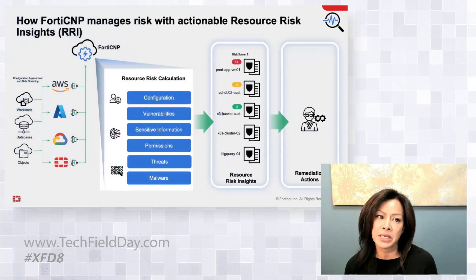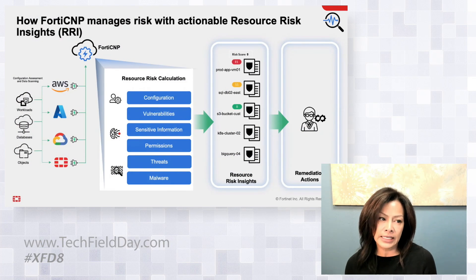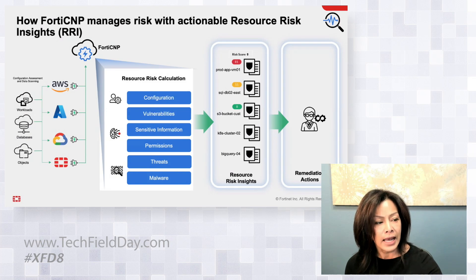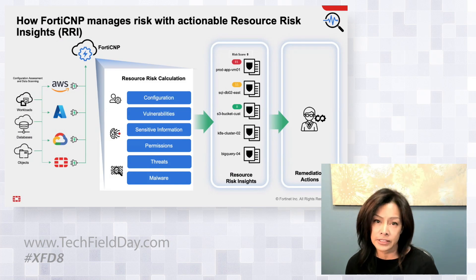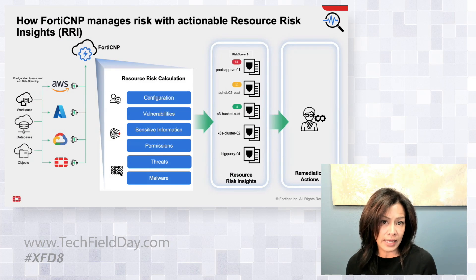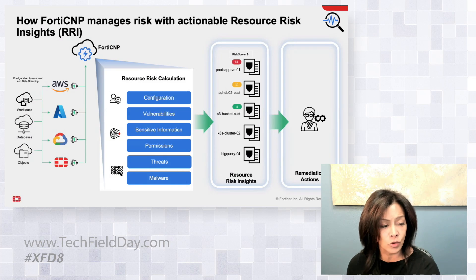Let's see how FortiCNP manages those risks. The technology behind this is called Resource Risk Insights, or RRI. It correlates and contextualizes security alerts and findings from different services across different cloud providers — as well as ratings from existing Fortinet customers — across cloud environments to produce an aggregated risk score.